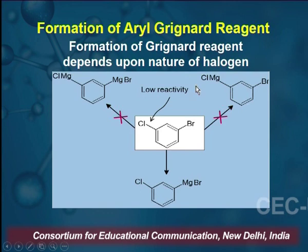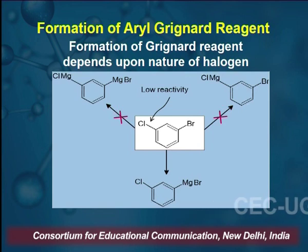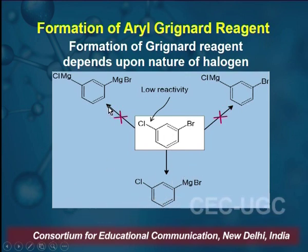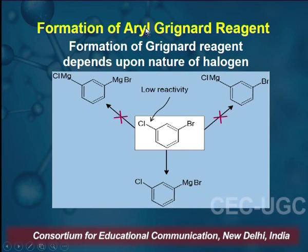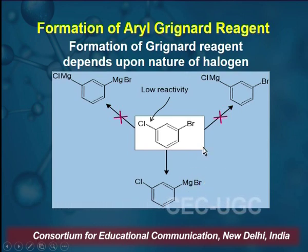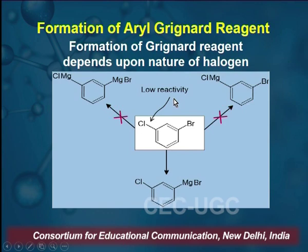Formation of Grignard Reagent depends on the nature of the halogen. As an example, meta-chlorobromobenzene is taken. If you treat it with magnesium in the presence of ether, the net result will be insertion between C–Br, resulting in this type of Grignard Reagent. Because insertion of magnesium between C–Cl and carbon in the aromatic system is difficult, the product containing both bromine and chlorine is not formed. Exclusively, the alkyl magnesium bromide containing chlorine is obtained, demonstrating selectivity in Grignard Reagent preparation.